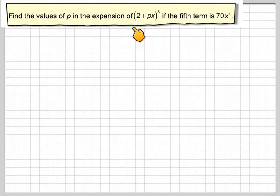Find the value for p in the expansion 2 plus px to the power of 8, if the fifth term is equal to 70x to the fourth. So we've got a binomial expansion of 2 plus px and we know the term 70x to the fourth.